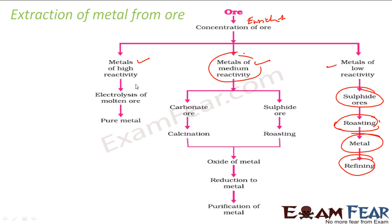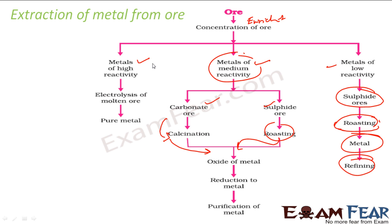In case of medium reactive substances, you either get carbonate ores or sulfide ores. So in that case you do calcination in case of carbonate ores to convert them into oxide ores. In case of sulfide ores, you do roasting to convert into oxide ores. At the end of the day, we want to convert everything into oxide ores. When it is oxide, we just reduce this metal. Once you have oxide, you can heat it in the presence of carbon — there are various processes of reduction. And then once you have the metal, you can purify it. For high reactive metals, you have to use electrolysis of the molten ore.